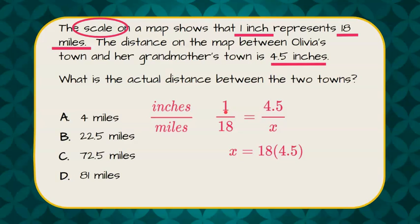Using cross-product property, one times X is X, and 18 times 4.5. So 8 times 5 is 0, carry the 4. 5 times 1 is 5, plus 4 is 9. 4 times 8 is 32.